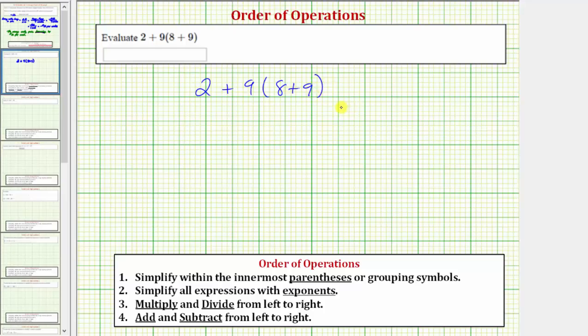Notice how it might be tempting to find two plus nine first, but this would not be correct because it does not follow the order of operations. Looking at our notes below, our first step is to simplify within the innermost parentheses or grouping symbols. Which means for our expression, we want to simplify inside these parentheses first.